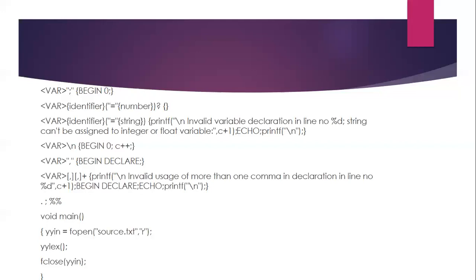In the user subroutine section, in the main routine: open the source file in read mode and assign it to yyin. Then call the yylex() function, and finally close the yyin file pointer.